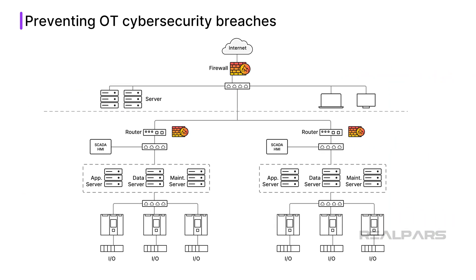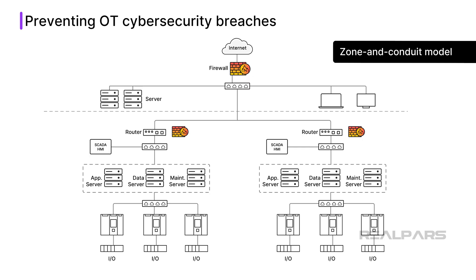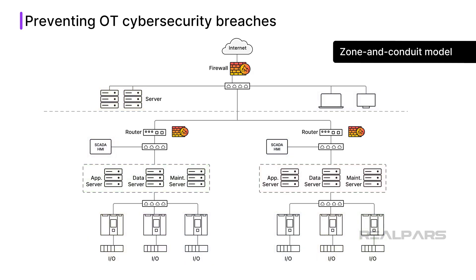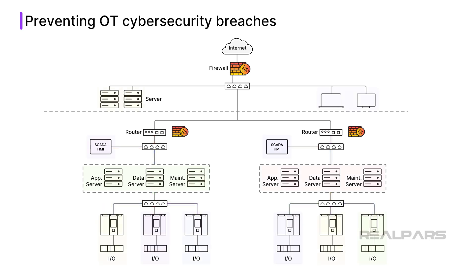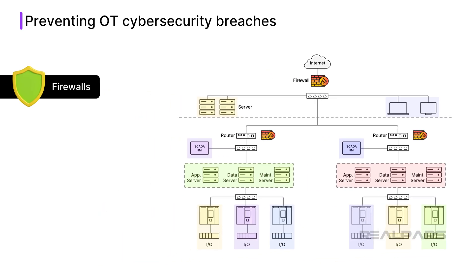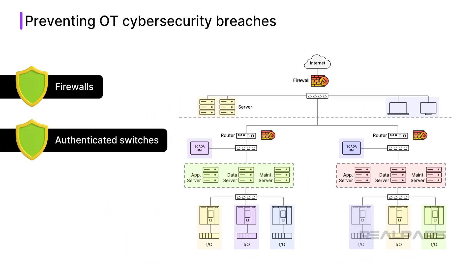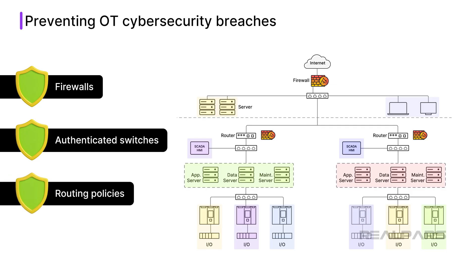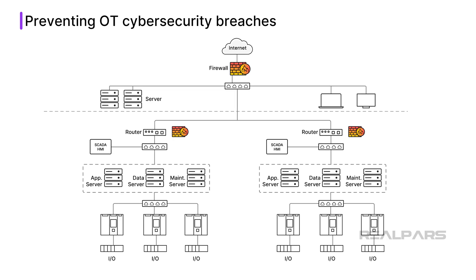Then, design your system architecture using the Zone and Conduit model. This strategy separates the network into zones with similar security requirements — for example, PLCs, SCADA, and servers — and defines secure communication paths or conduits between them. Appropriate protections such as firewalls, authenticated switches, and routing policies are applied at zone boundaries.